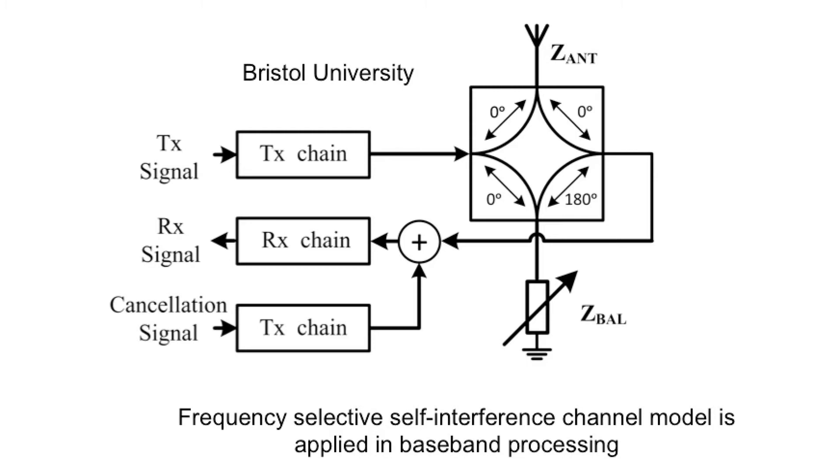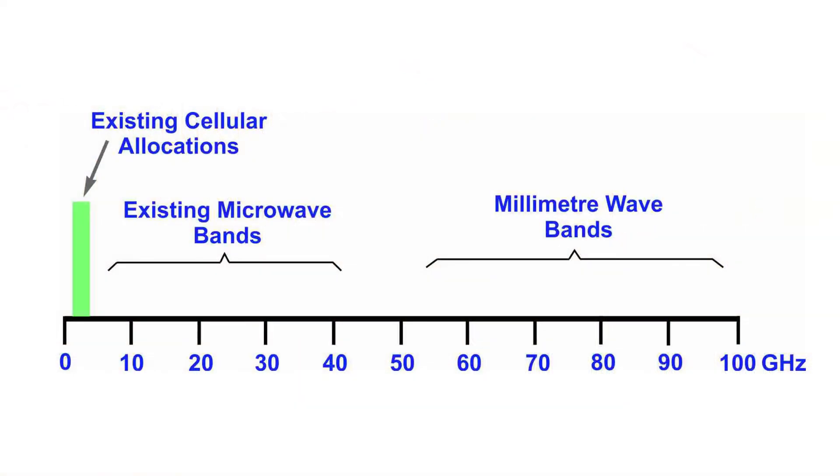I also mentioned millimeter wave communications at the beginning. The problem we've got for 5G is finding that available spectrum. Below 6 gigahertz, we probably only got about a gigahertz of available bandwidth for our wireless technologies. Moving above 30 gigahertz and up towards 100 gigahertz, we're going to find pockets of a gigahertz, or 5 gigahertz, or 7 gigahertz.